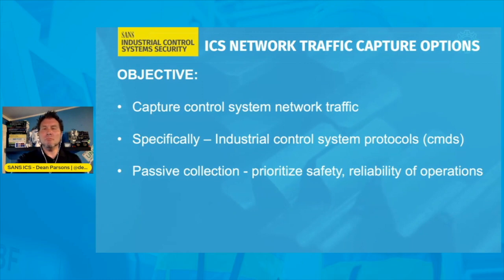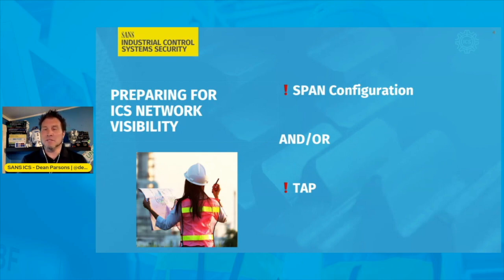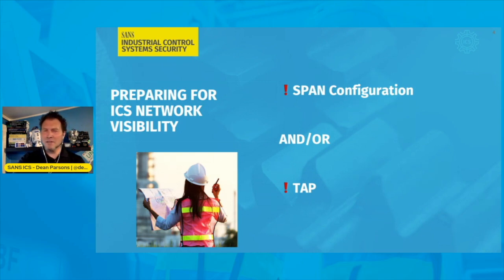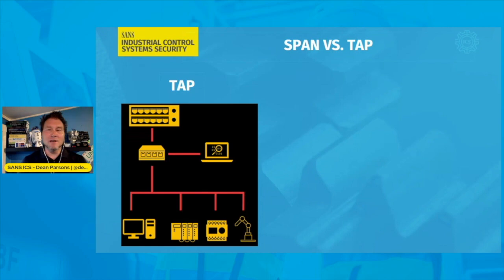You will have two main options to collect traffic from a network. In our environment, we're going to be looking at either a SPAN configuration off a fully managed switch in the control system, or by using a TAP that's installed in the network. With a TAP, we see additional hardware inside the network that will copy all of the network traffic going through it to a collection device of your choosing.